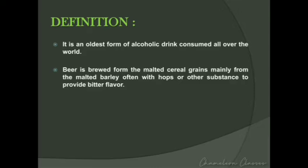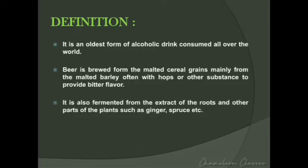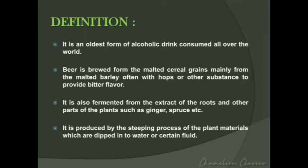What is malt? It is a product left over from the cereal grain after it has been dried, allowed to sprout, air-dried again, and heated in an oven. This includes cereal grains such as rice, wheat, and oats. Beer is also fermented from the extract of roots and other parts of plants such as ginger and spruce, produced by the steeping process where plant materials are dipped into water and certain fluids.